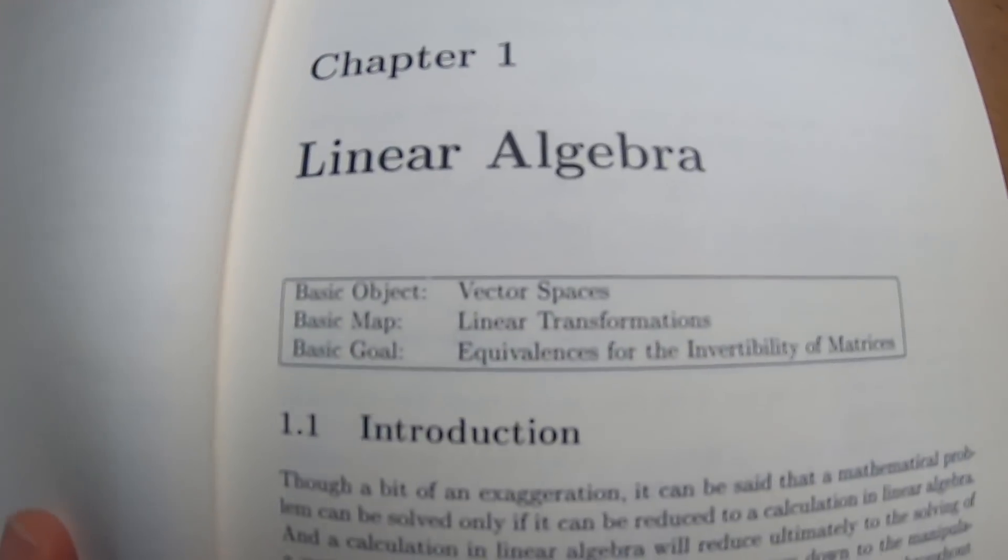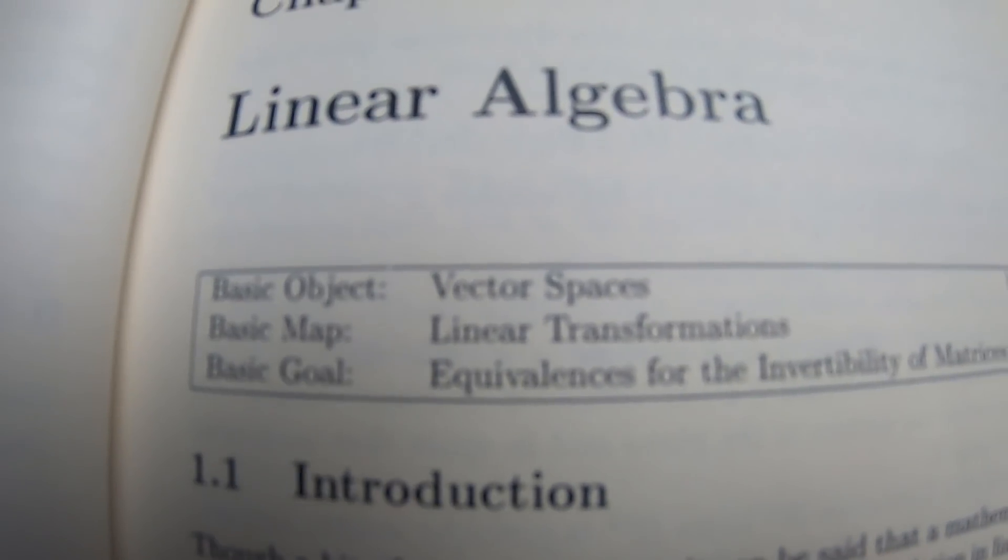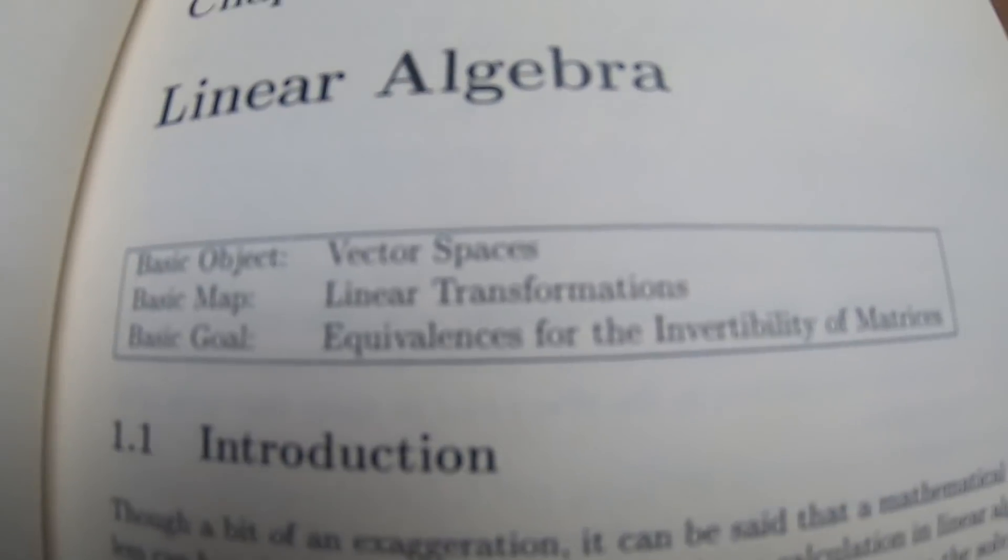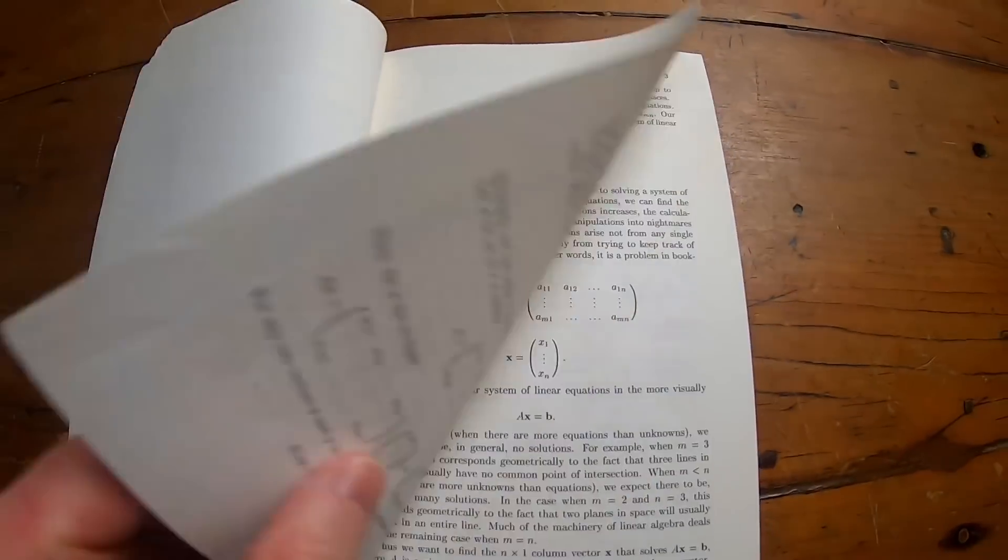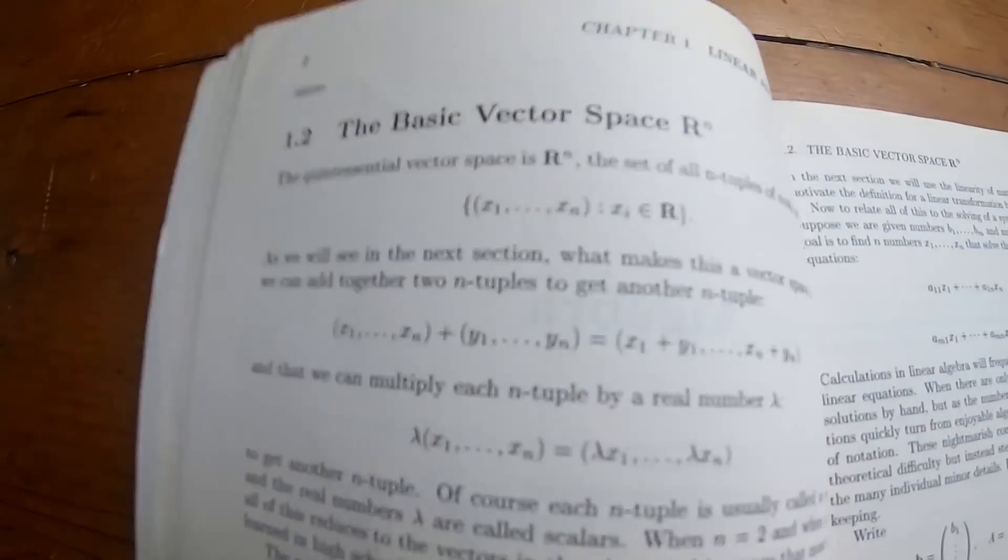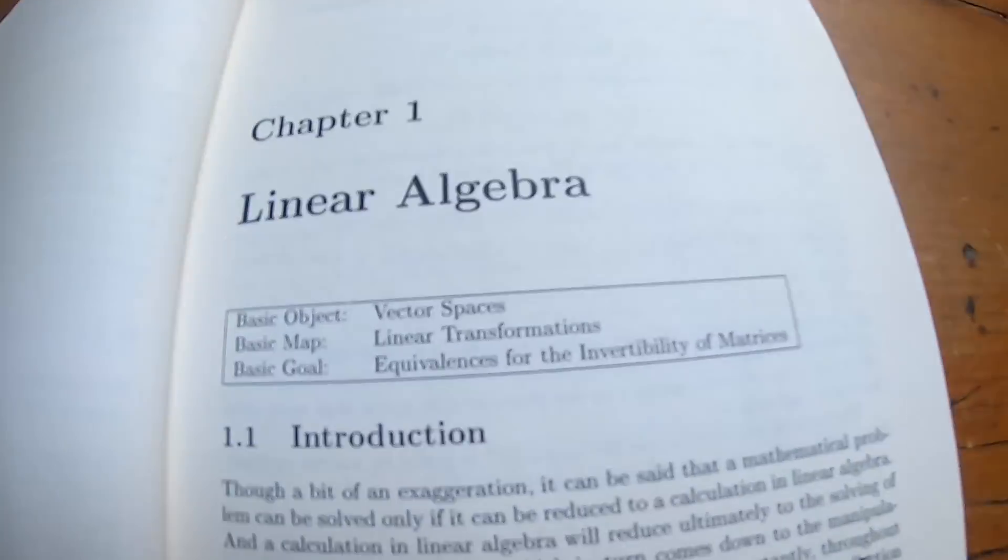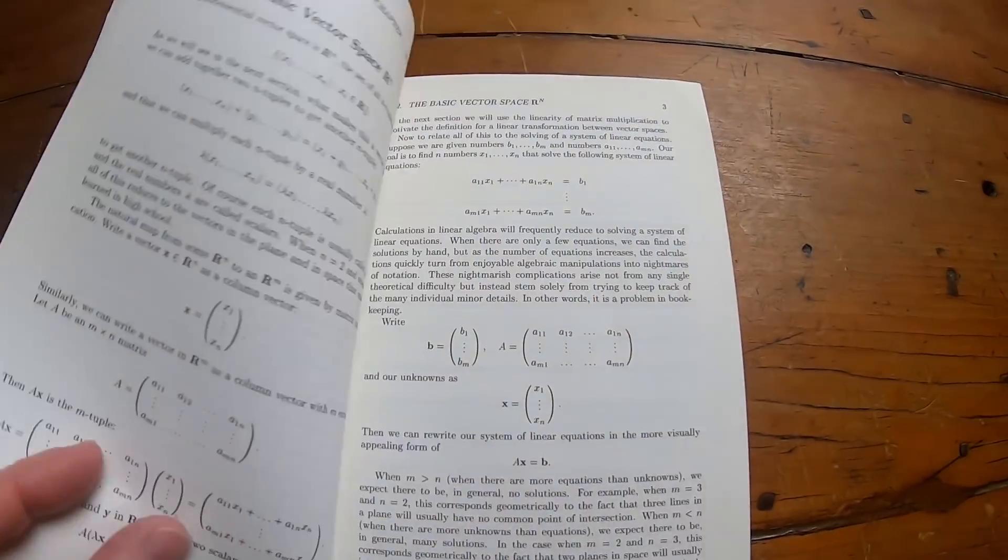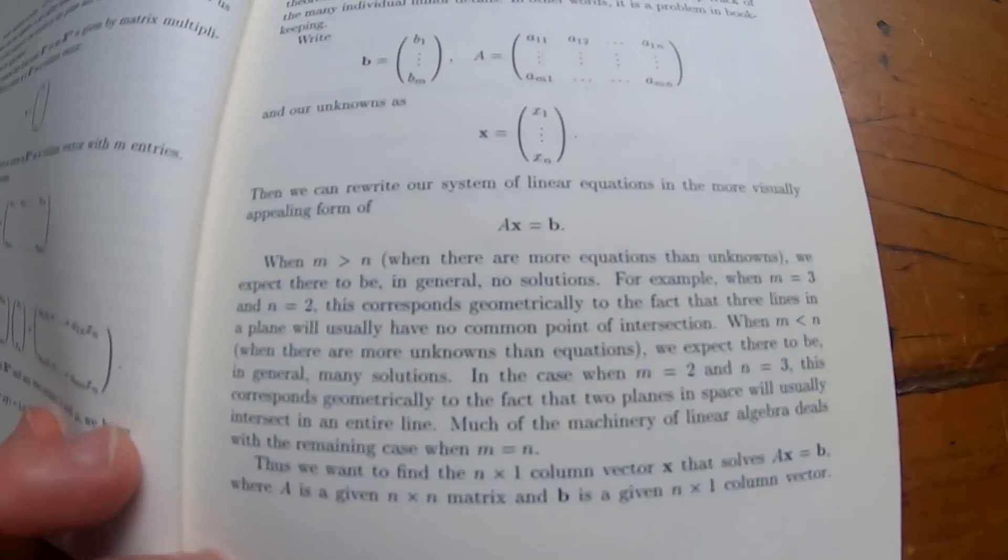So here he begins the full treatment. Okay, so, like, for example, this is the section on linear algebra. He talks about the basic object, the basic map, and the basic goal. So it really breaks it down for you in a really nice way that you can't get in other books. You know, you're not going to buy a linear algebra book and get that. You know, the linear algebra book is not going to say, like, okay, this is the main idea in one little box. And then he goes through and he gives you all of the basic information you need, like, all of the key things in linear algebra. Let me show you.